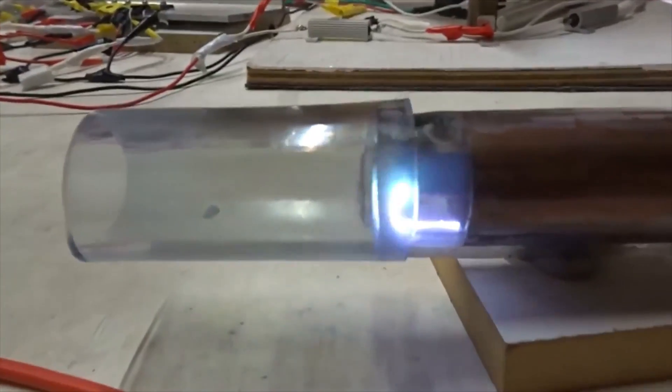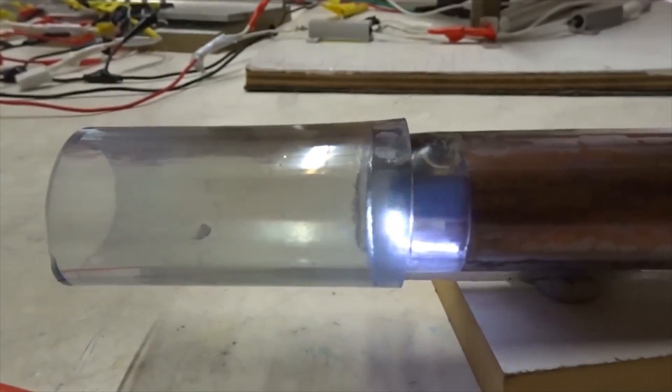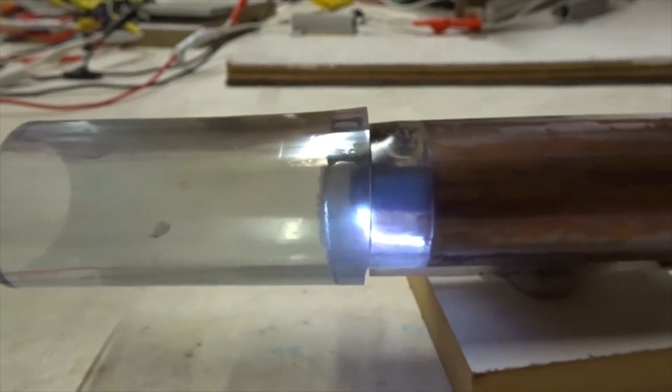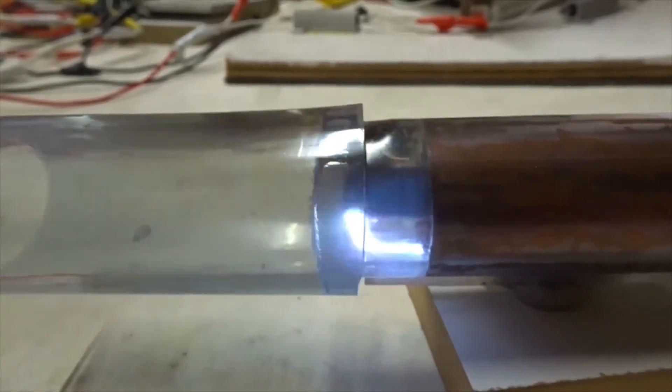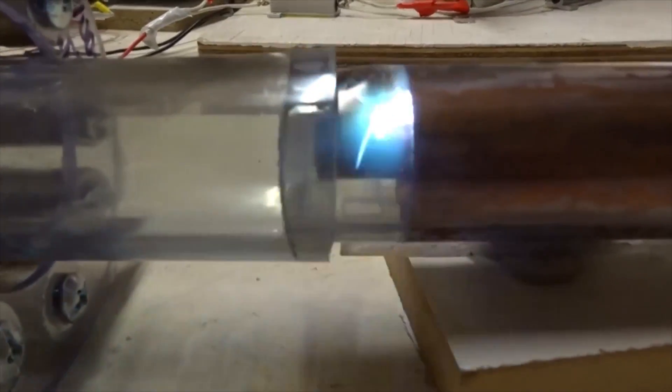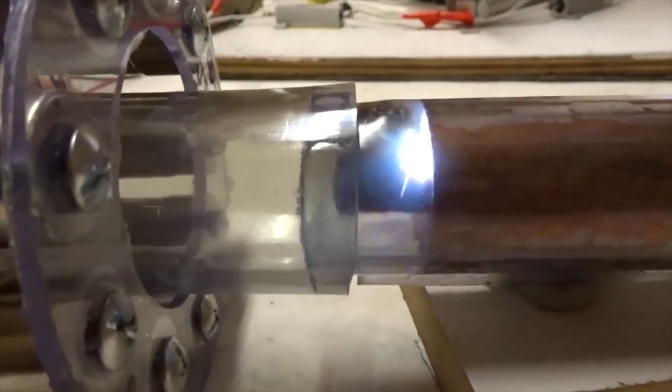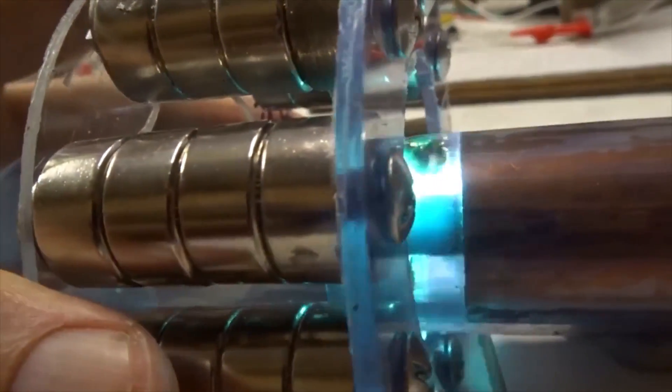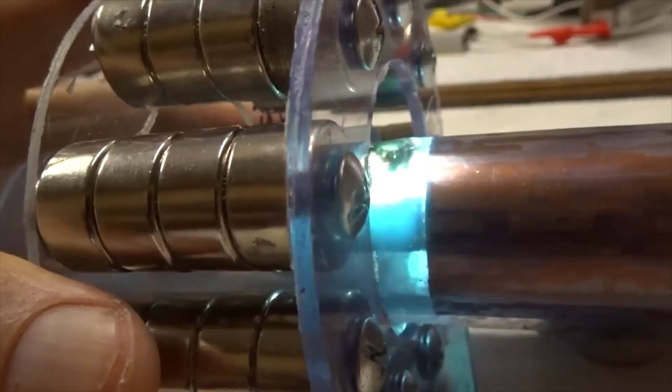Without any magnets there, all we see is an arc between the two electrodes - negative in the center and positive on the outside. When we add the magnets back in, the arc starts to spin and release quite a nice flame.